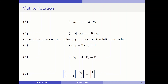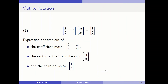x1 and x2 are here in the vector, and the right hand side values are collected in the solution vector. This expression consists of the so-called coefficient matrix, the vector of the two unknowns, and the solution vector.